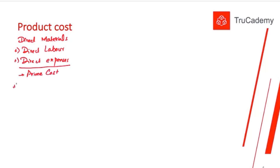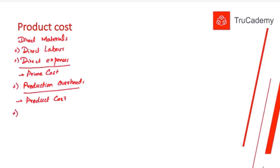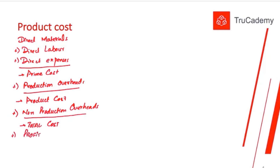To the prime cost, we add production overheads and we get the product cost. If we then add non-production overheads, we get the total cost. And if we add our profit markup on top of that total cost, we get the total selling price of our product — the price we will charge to our customer. Let's now discuss each of these terms so you get a better idea.